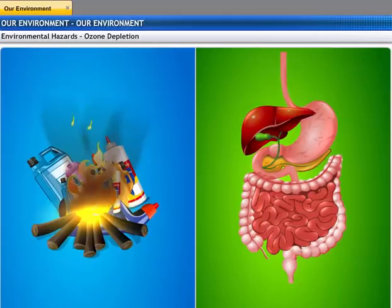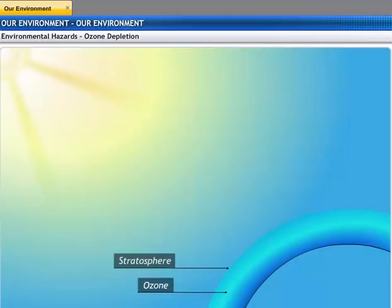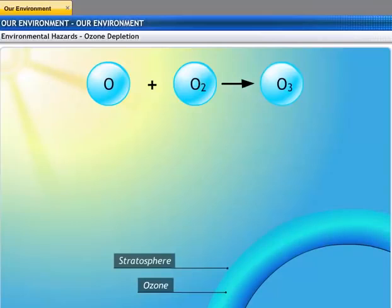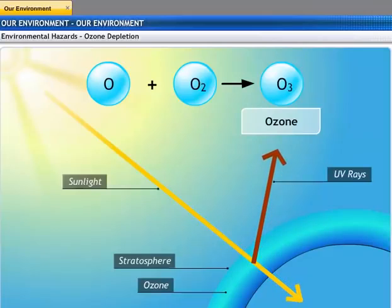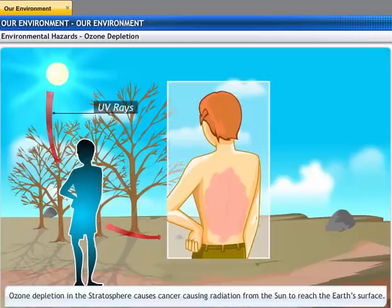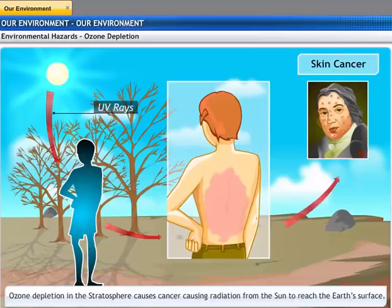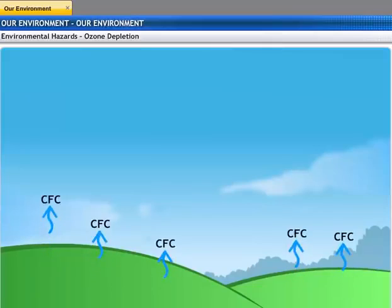Ozone is a molecule formed by three atoms of oxygen. UV radiations at higher levels of the atmosphere split atmospheric oxygen into free oxygen atoms, and these free atoms combine with atmospheric oxygen to form ozone. There is an ozone layer in the stratosphere which acts as a natural sunblock, shielding us from the UV radiations of the sun. If this shield is weak and UV radiation penetrates through it, it can cause damage to organisms and is known to cause skin cancer in human beings.